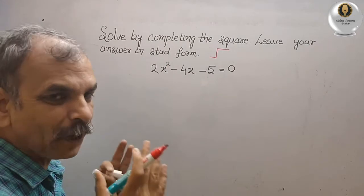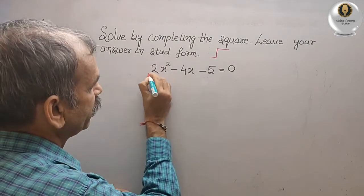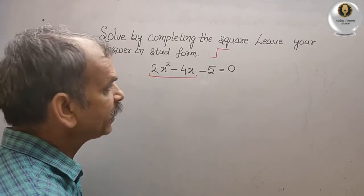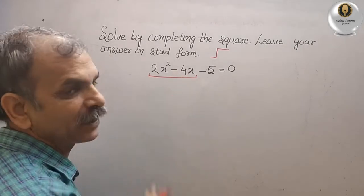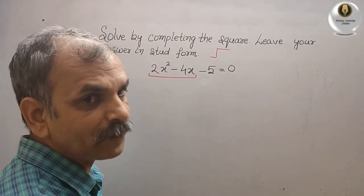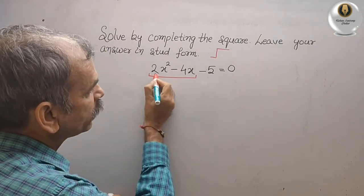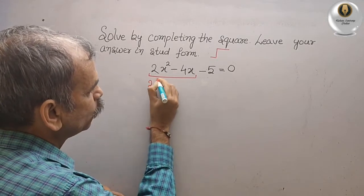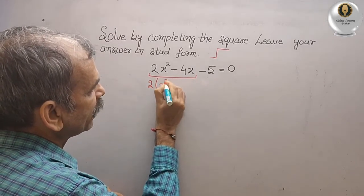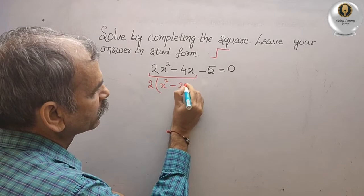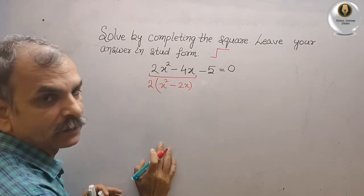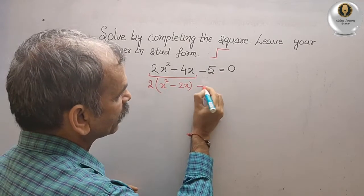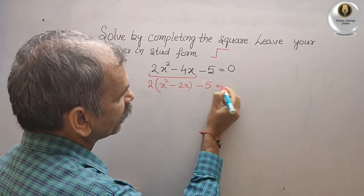Now we have to see up to the middle term only. We can see a minus sign is there, and at the same time 2 is common. So we will write it as 2 times (x squared minus 2x), and minus 5 here, that gives you 0.